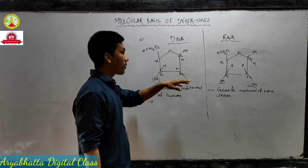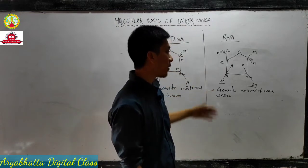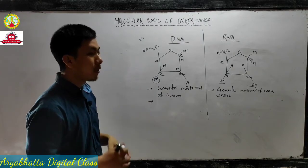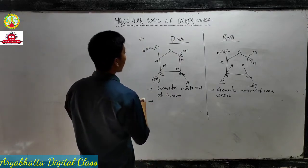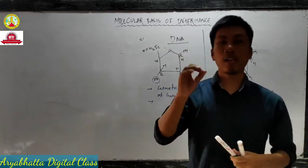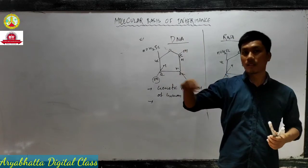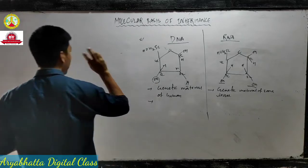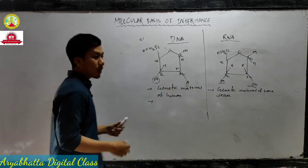In the case of RNA, it has two free functional groups, so more reactive, less stable. Write the comparison points by yourself. In the exam, if the question asks for the molecular structure of DNA, draw the molecular structure. If it asks for the double helical structure of DNA - given by Watson and Crick - draw that structure.